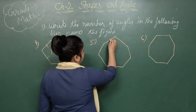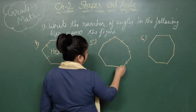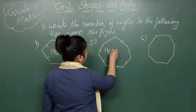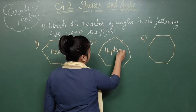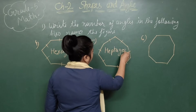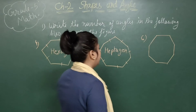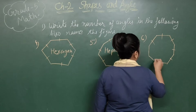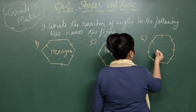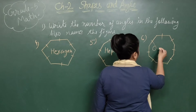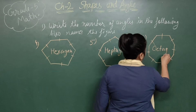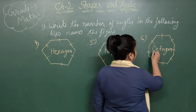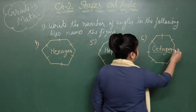Now this shape is having one, two, three, four, five, six, seven sides — you can say heptagon. And then this next shape is having one, two, three, four, five, six, seven, eight sides. Eight means octa, so you can say octagon. You can see this shape has eight sides — octagon.